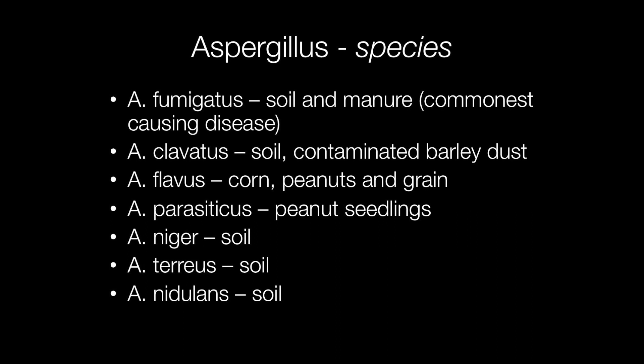Aspergillus parasiticus is found in peanut seedlings. Aspergillus niger, Aspergillus terreus, and Aspergillus nigelans are all found in the soil.